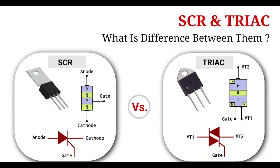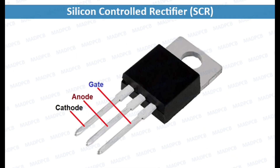Reverse blocking mode — Condition: negative voltage is applied to the anode relative to the cathode. Behavior: junction J1 is reverse biased, while junctions J2 and J3 are forward biased. The SCR remains in the off state, blocking the current flow. The device can withstand a high reverse voltage up to its rated value.